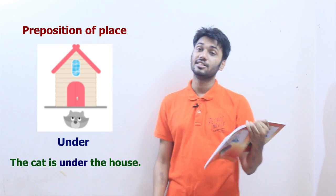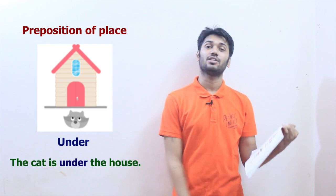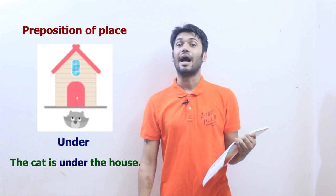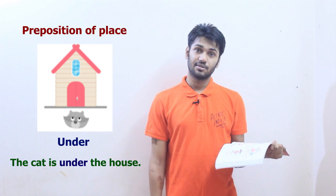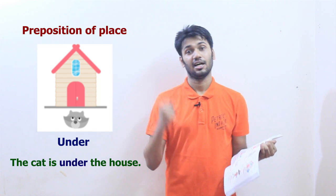The very first one is 'under.' Something that is under a space or a surface. Look at the picture — the cat is under the house, just below the house. If something is under a surface, we say 'under.' The ball is under the bed. The man is under the tree. I am going under the bridge. He is standing under the bridge. This is how you bring more examples and explain their meanings.